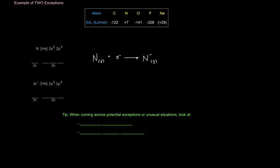Here are some examples of exceptions. The first one is neon — neon is a noble gas, and its electron affinity value is actually positive, which we just said means a lower electron affinity. Neon has a lower electron affinity because it's stable in a noble gas configuration and does not want to gain another electron, so it would require energy to add an electron. Neon does not have a high affinity for an electron.